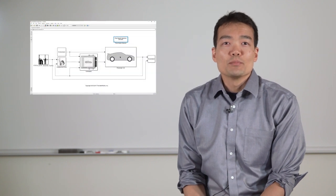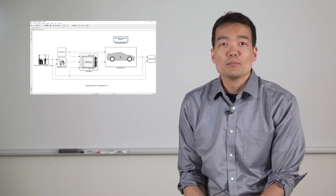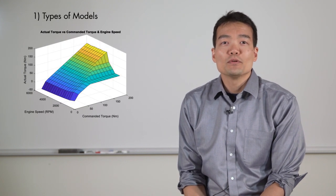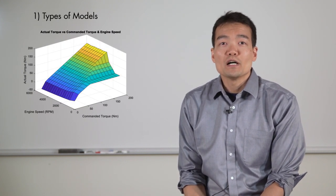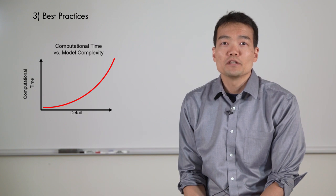Welcome, everyone. My name is Kevin Oshiro, and I'm a member of the application engineering group at the MathWorks. The objective of this example is to provide you an overview of how to perform hybrid electric vehicle plant modeling. I will go over three topics: types of models, MathWorks modeling tools, and best practices for HEV modeling.